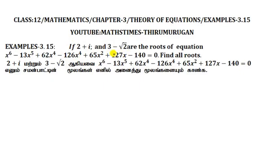If 2 plus i and 3 minus root 2 are the roots of a given equation, it is a 6th-degree equation. Find all the roots. Two roots are given; we have to find the remaining 4 roots. A 6th-degree equation has 6 roots — 2 roots are given, remaining 4 roots we will find out.